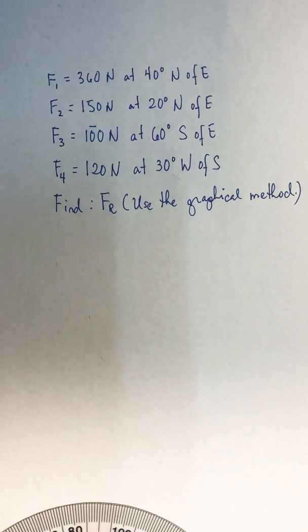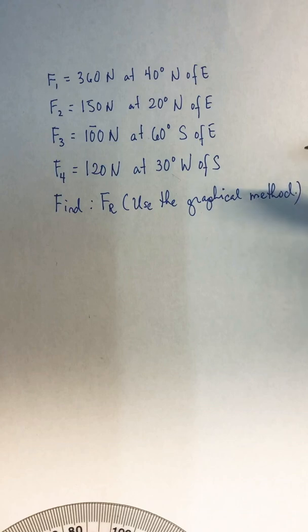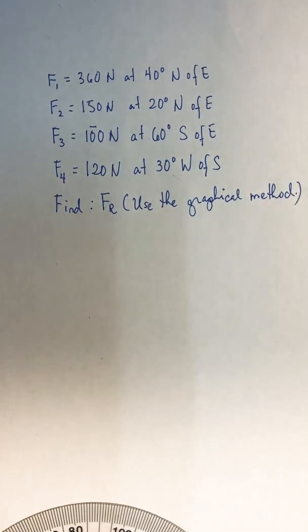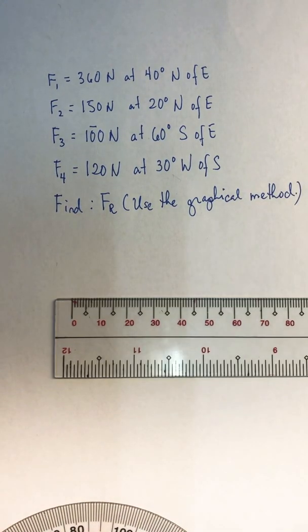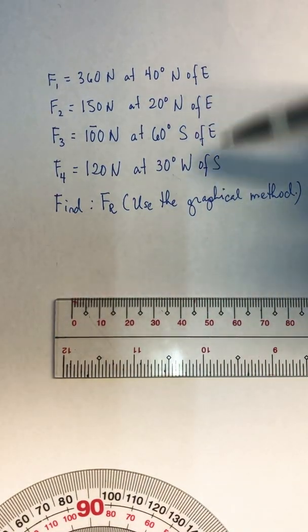Hello Grade 10, welcome to your online physics class. Yesterday we started with the graphical method in resolving vectors. We had this problem but weren't able to finish, so today we're going to try and solve it with the use of your ruler and your protractor. We have four forces here and you are asked to get the resultant force.